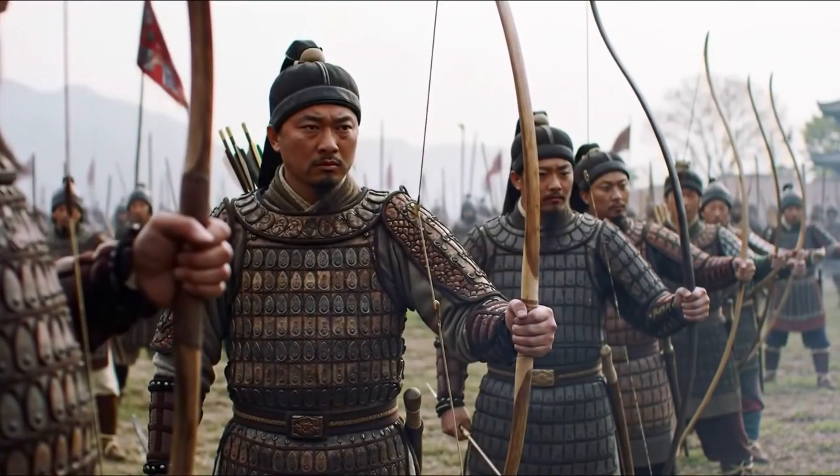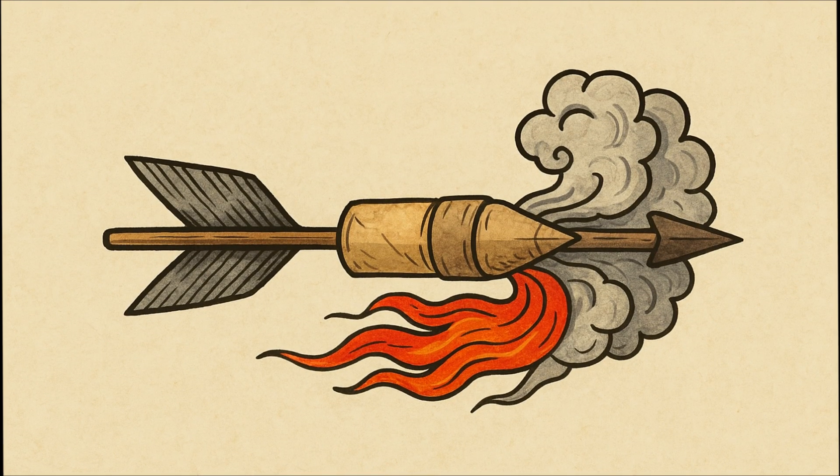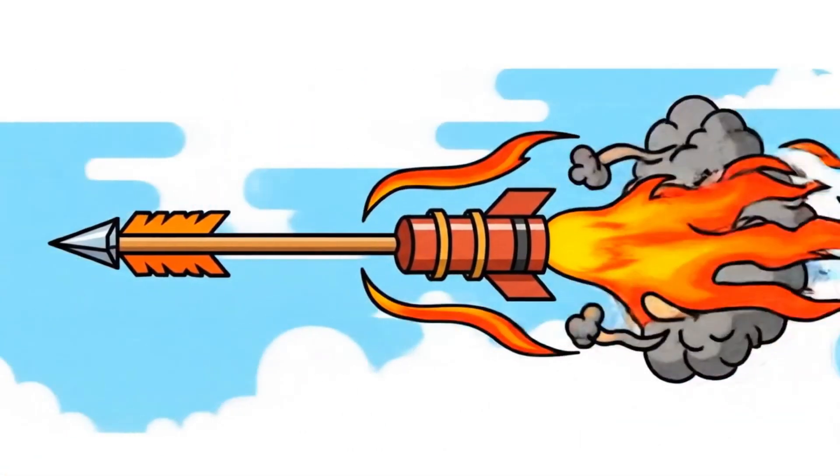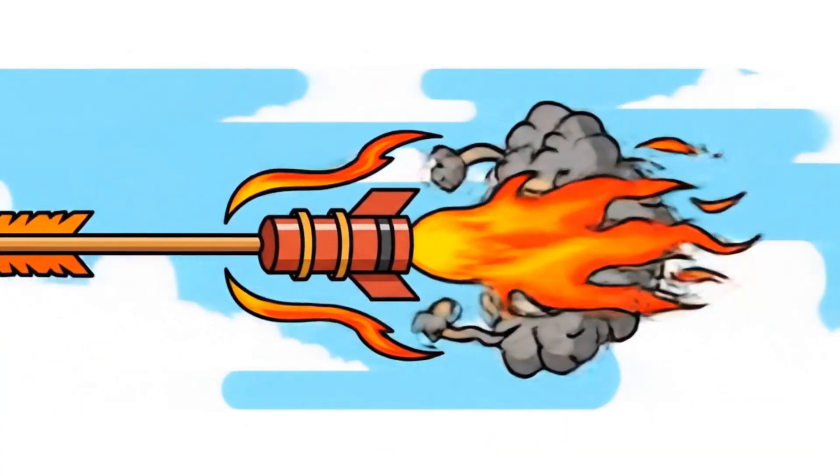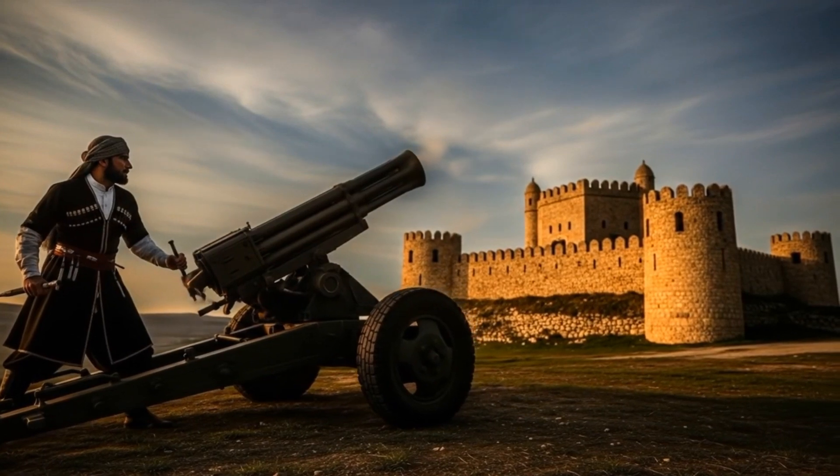They built rockets using gunpowder. It was basically a mix of hand grenades and rockets. These were called fire arrows, wooden arrows with gunpowder attached and fired into the air. This was the world's first primitive missile technology.